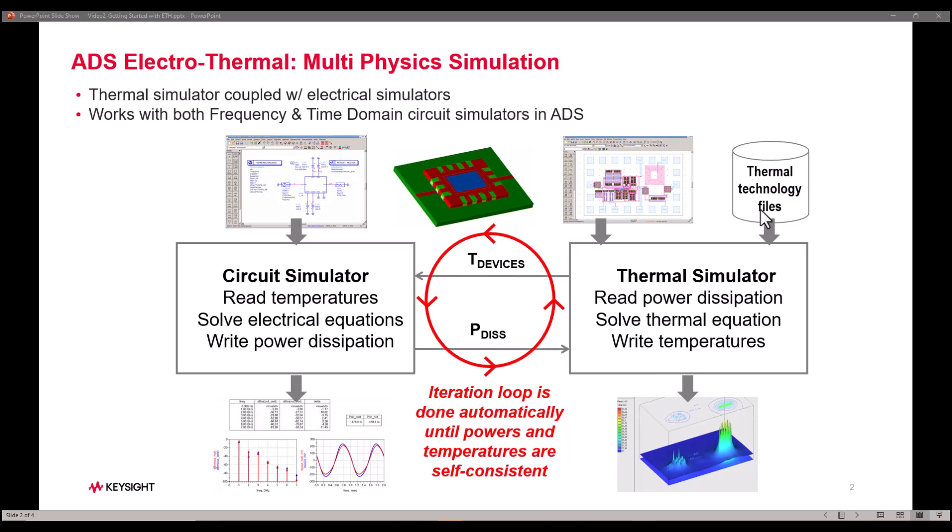Thermal simulator solves the thermal equation and calculates the temperature. All these things happen with help of thermal technology file which has all the relevant information to enable the thermal analysis. All the devices temperature which we calculate is then passed back to circuit simulation to continue the loop and this loop will be done till the powers and temperature between these two representations are self-consistent that means the results are converged.